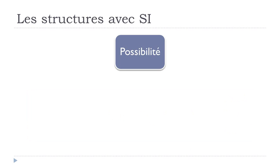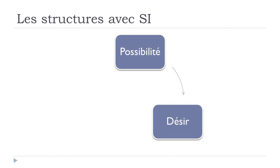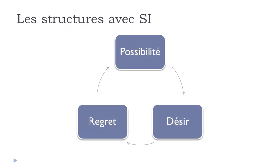The first option we'll have is if we want to express LA POSSIBILITÉ. The second one is LE DÉSIR, and the last one is LE REGRET. So: POSSIBILITÉ — POSSIBILITY, DÉSIR — DESIRE, and then REGRET — REGRET. And so we'll start with LA POSSIBILITÉ.